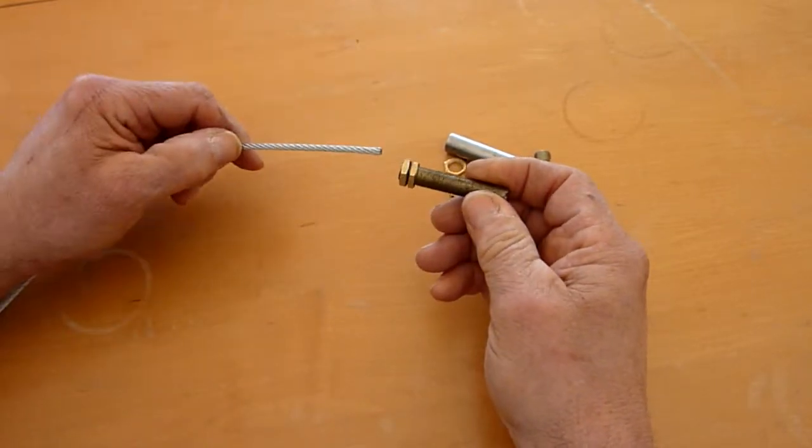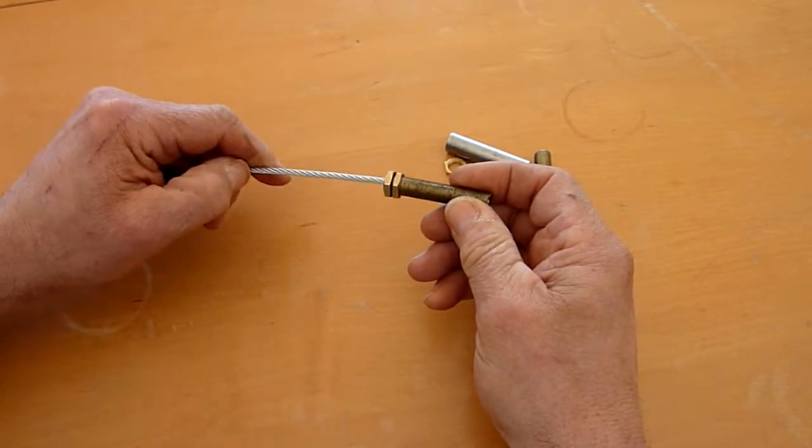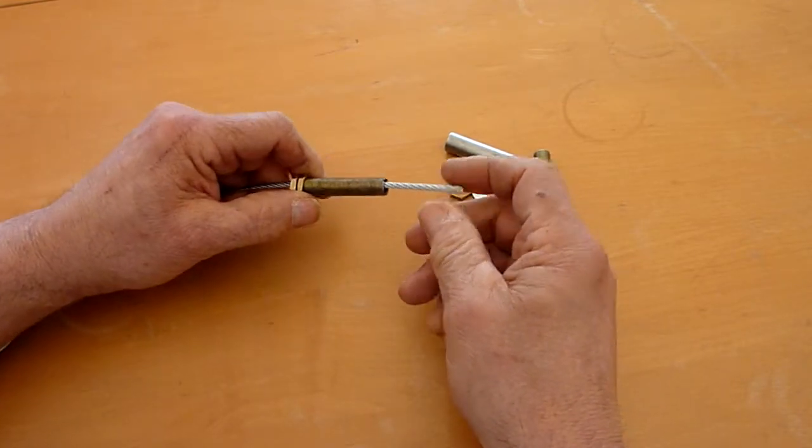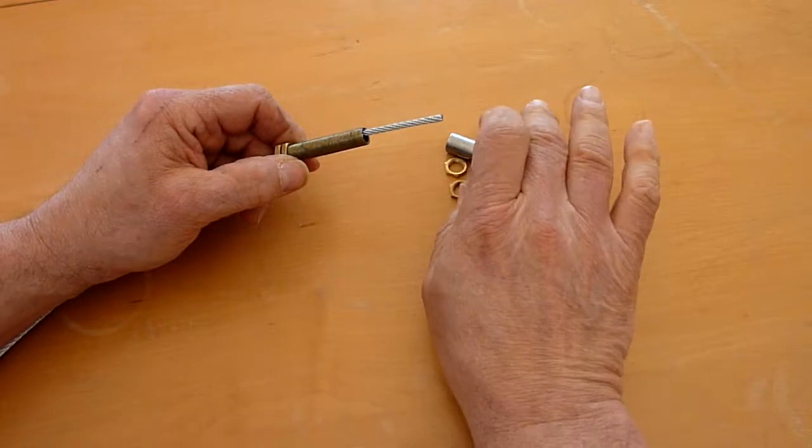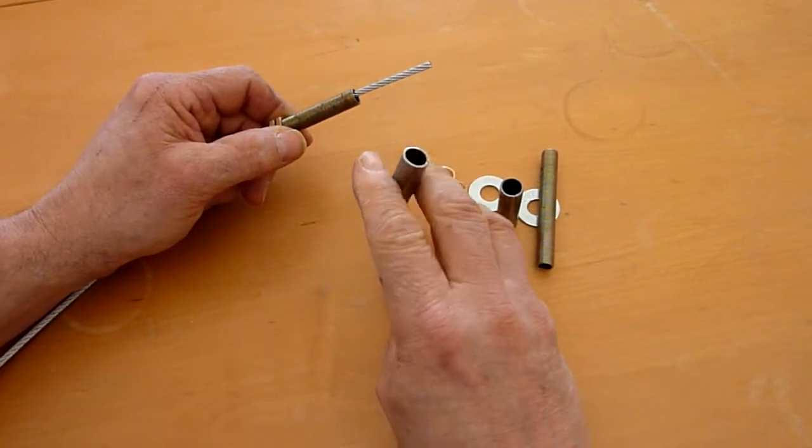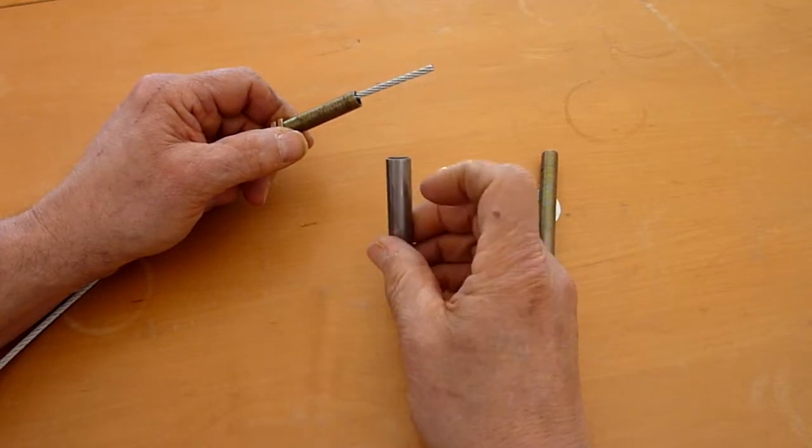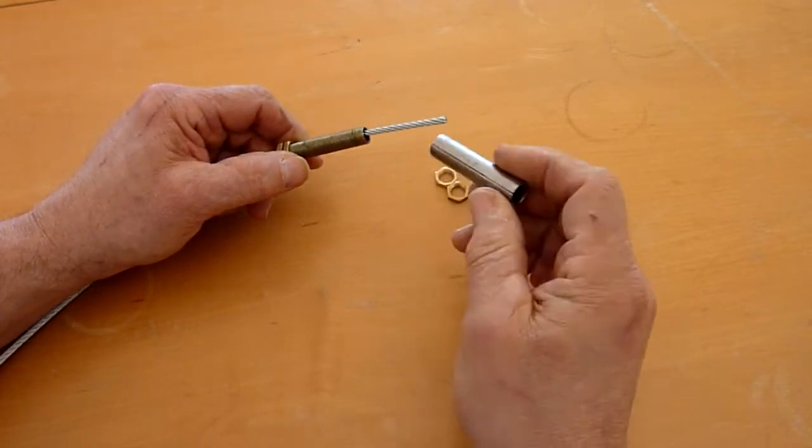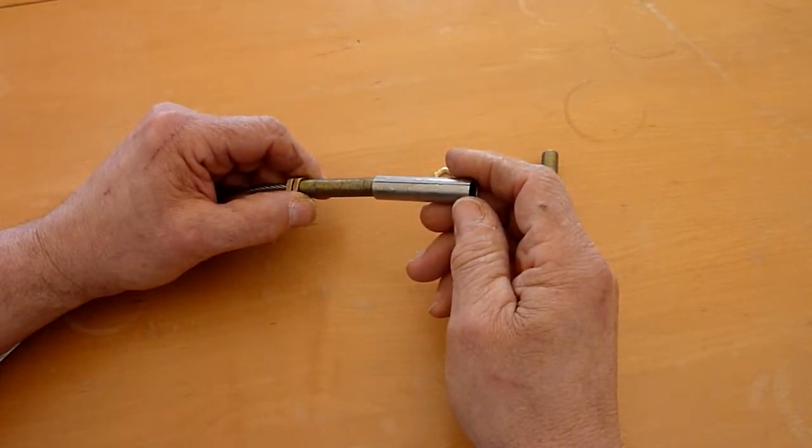And then if you run the cable up through the middle, you can then take another part that you can get at any hardware store that is also a lamp part, and it will fit over that threaded piece.